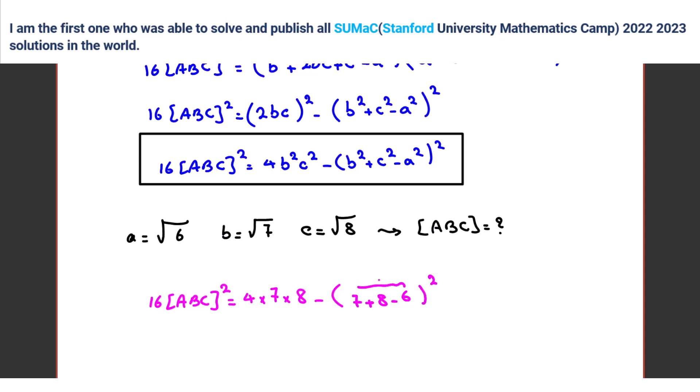Which is what? 9. So 4 times 7, 28, right? 8 times 28 is what? 224. Minus 81 is what? 1, 4, 3. So area of ABC is the square root of 1, 4, 3 over 4, right? Yeah.